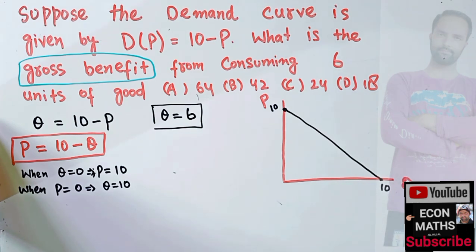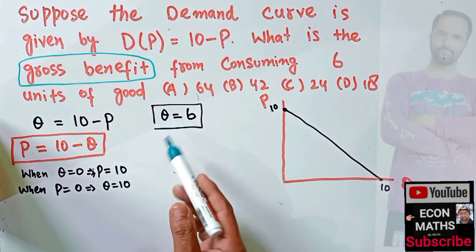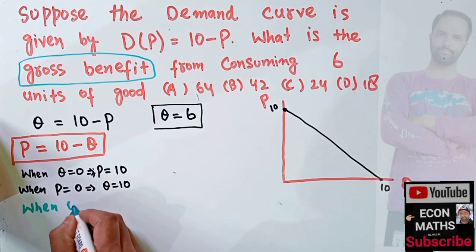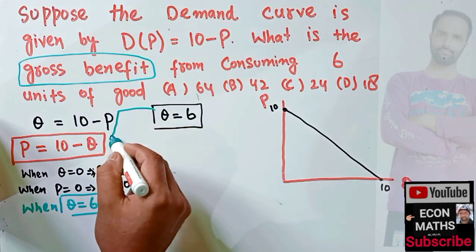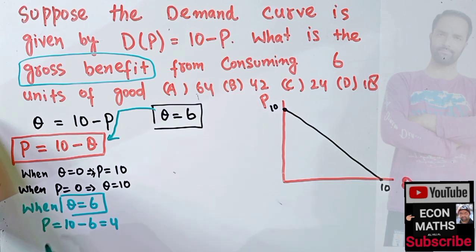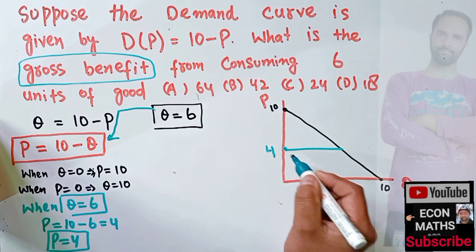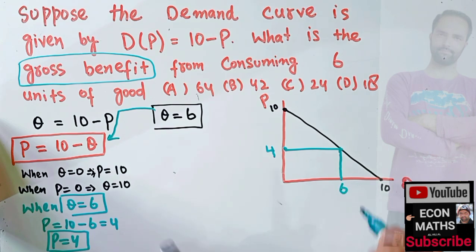The second step is to find the price corresponding to a quantity demanded of six units. When Q = 6, substituting into P = 10 minus Q, we get P = 10 minus 6, which equals 4. So the price is equal to 4, and the corresponding quantity demanded is 6.